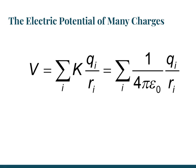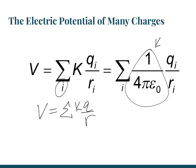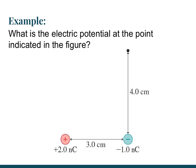The last thing we need to look at is the electric potential of many charges. This is just taking a bunch of point charges and finding the potential due to all of them at once, and it's super simple because it's just adding them up. The potential at a point is the sum of all the potentials from each point charge. For each point charge i, the potential is KQ_i over R_i — the same as 1 over (4πε₀) times Q over R — and you just add them all up.